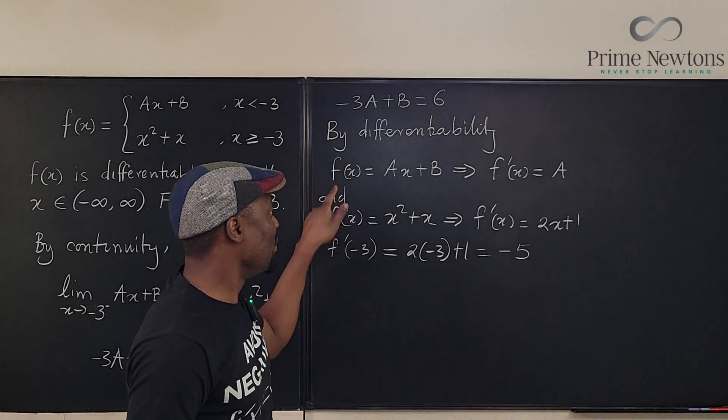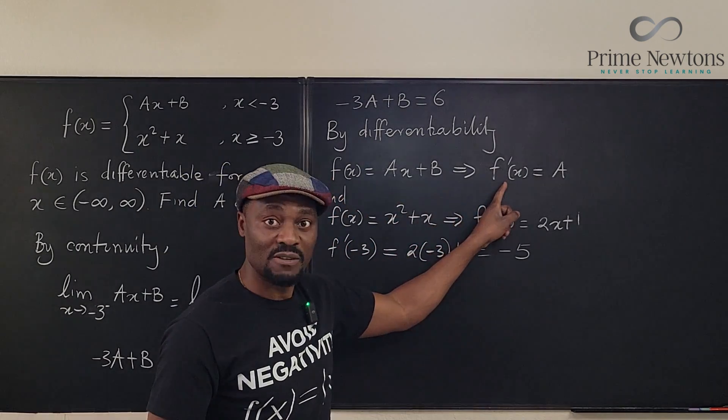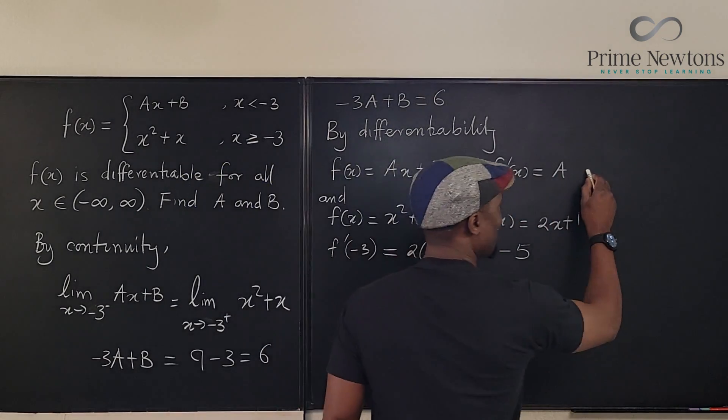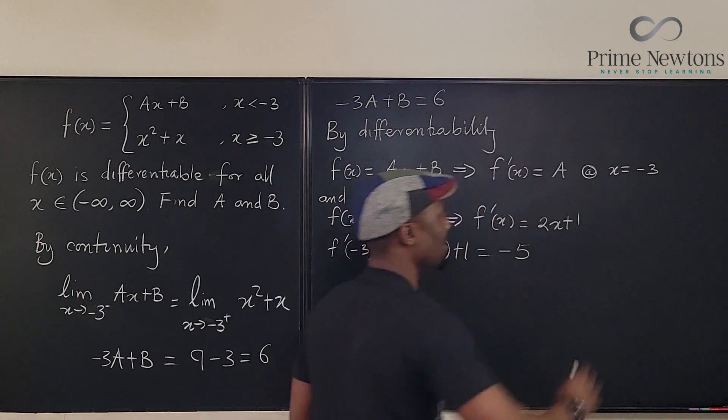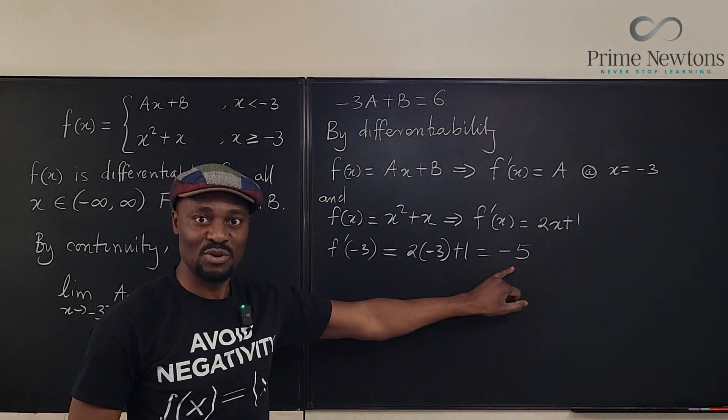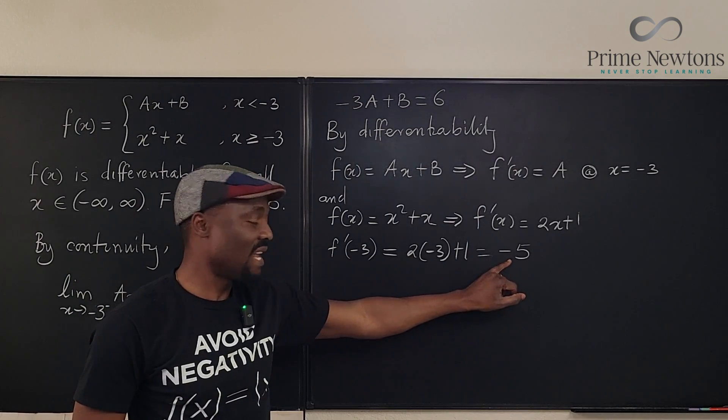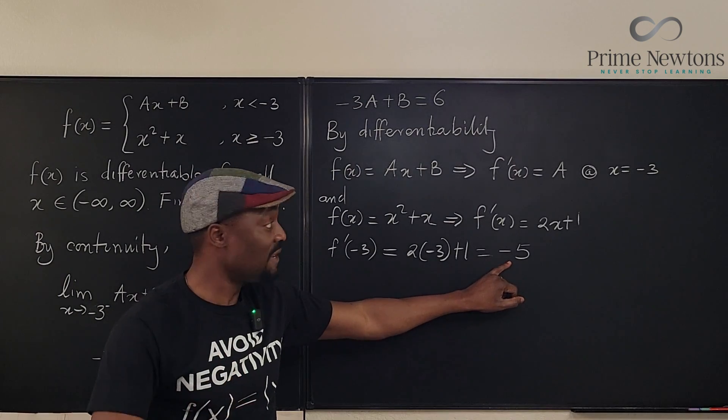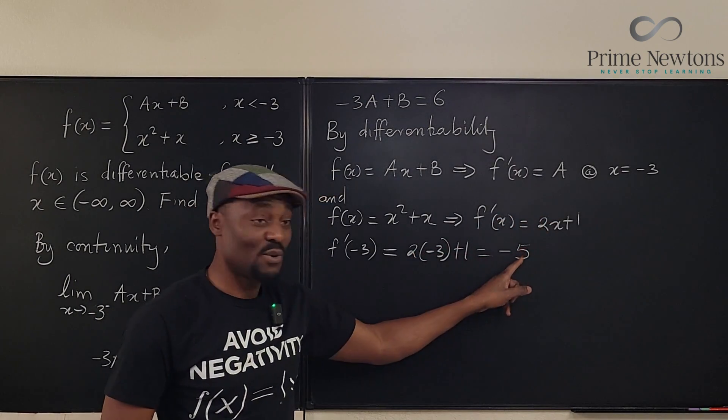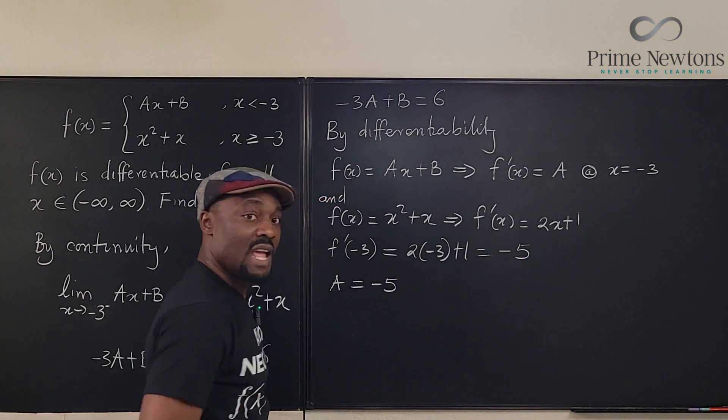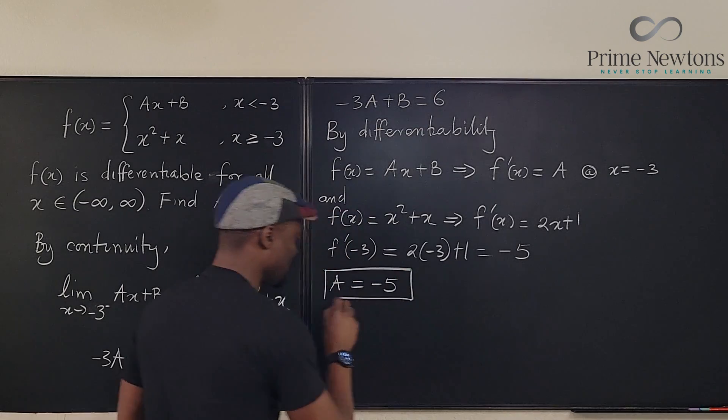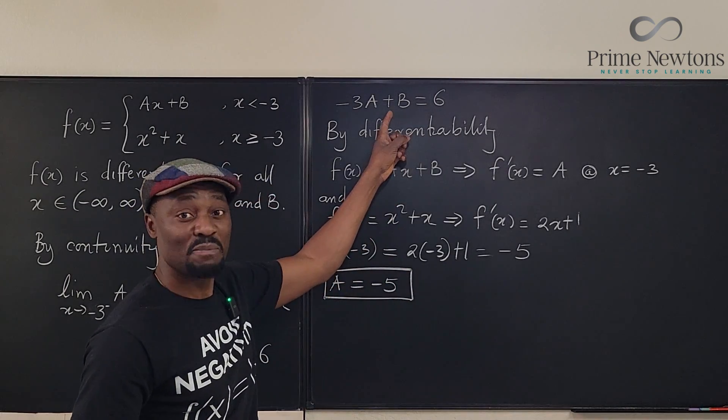So the derivative of this function is a. This is at x equals 3. Let's not forget, at x equals minus 3, rather. And that is the same derivative that we just obtained. It is minus 5. So clearly, a is equal to minus 5, a is equal to minus 5. And since we've gotten a to be minus 5, we can go back here now and get what b is.